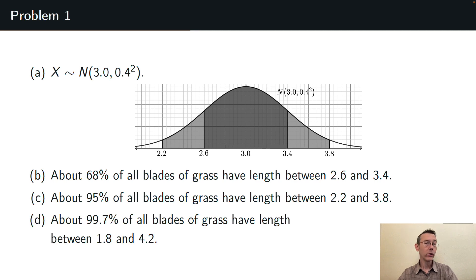If I go one more standard deviation in each direction I get 99.7% of the probability. So 99.7% of all blades of grass have lengths between 1.8 and 4.2 inches. Again just going one more standard deviation in each direction.